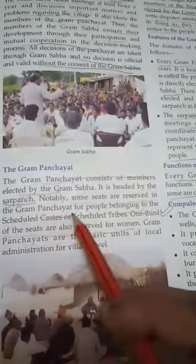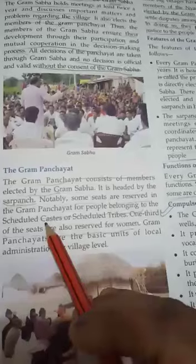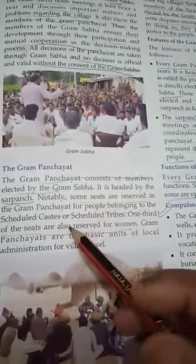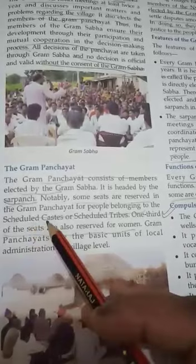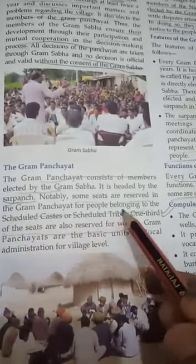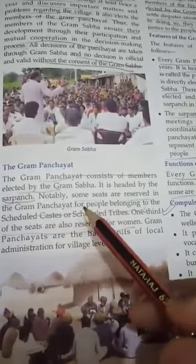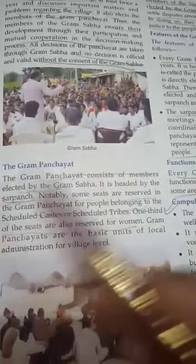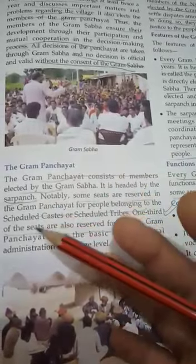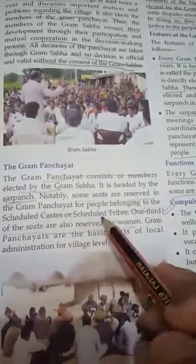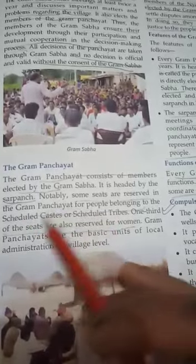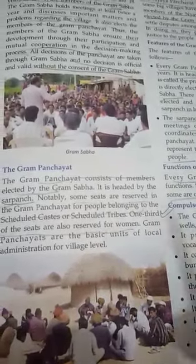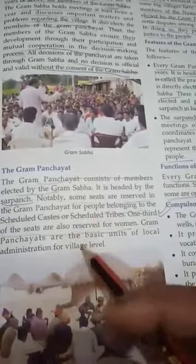Notably, some seats are reserved in the Gram Panchayat for people belonging to the Scheduled Caste or the Scheduled Tribe. In villages, the upper caste system is very prominent, so if the Sarpanch belongs to a different caste he may take decisions against minority caste members. Therefore, there is also a representative of these castes to avoid any kind of partiality and ensure decisions are good for all as a community.